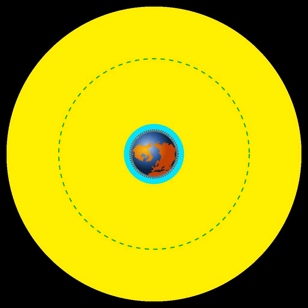Heliocentric orbit, an orbit around the Sun. In the Solar System, all planets, comets, and asteroids are in such orbits, as are many artificial satellites and pieces of space debris. Moons by contrast are not in a heliocentric orbit but rather orbit their parent object.